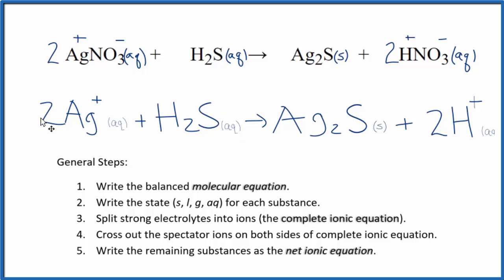You note two charges conserved. We have 2 times 1 plus here, so 2 plus, 2 times 1 plus, so 2 plus here. So both sides, we have 2 plus. Charge is balanced. And the atoms, they're balanced as well.